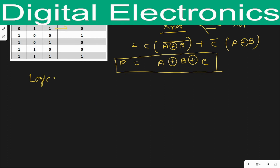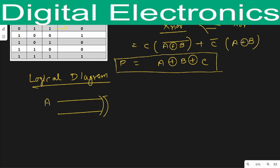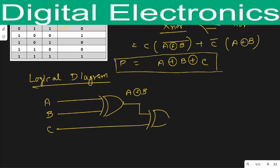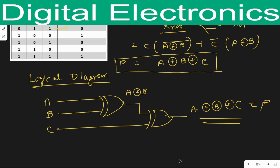By using the above equation we will draw a logical diagram. In the logical diagram we take A and B as inputs of the first XOR gate, getting output A XOR B. We then provide that as input to the second XOR gate along with C, giving output A XOR B XOR C, which is P. This is the complete parity generator circuit. Thank you so much.